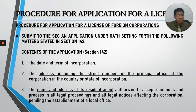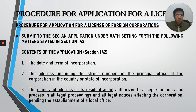The application must include the name and address of the resident agent authorized to accept summons and process in all legal proceedings and legal notices affecting the corporation, pending the establishment of a local office. Since the corporation is only applying for a license and has not yet established a local office, communications from the SEC will go through the resident agent.